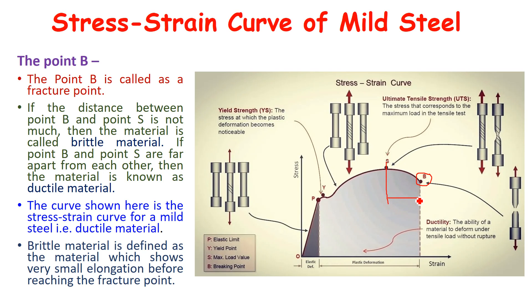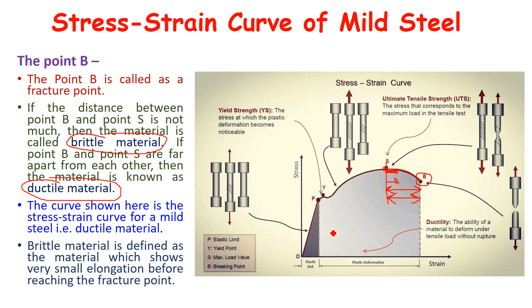The distance between S point and B point will decide whether the material is brittle or ductile. If the distance between S point and B point is very small — meaning after ultimate load, the material immediately breaks — the material is called a brittle material. If the distance between S point and B point is large, meaning B point is far away from S, then it is called a ductile material. Mild steel is a ductile material because B point is far away from S.